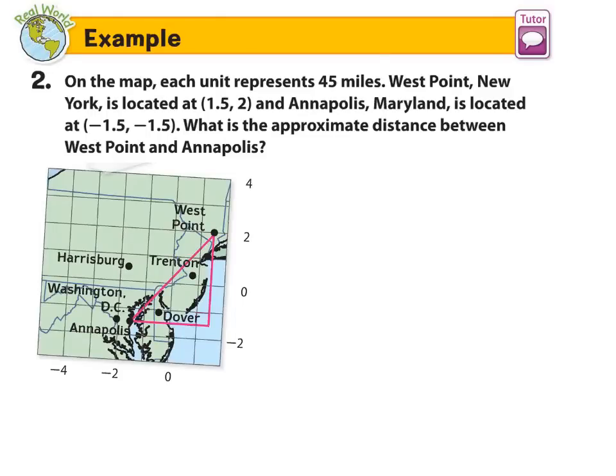Example two. On the map, each unit represents 45 miles. Very important to remember that. So that means each of these boxes here represents 45 miles. West Point, New York is located at (1.5, 2), which is right there. And Annapolis, Maryland is located at (-1.5, -1.5), right there. What is the approximate distance between West Point and Annapolis?